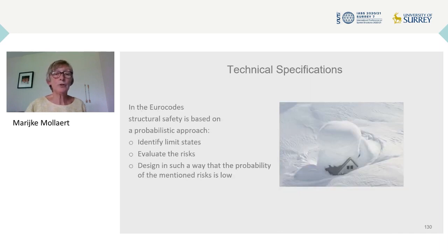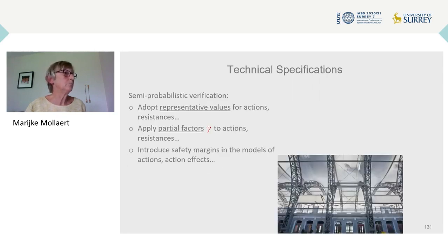In the Eurocode, structural safety is based on a probabilistic approach. We identify limit states, evaluate the risks, and design in such a way that the probability of these risks remains low. We adopt representative values for actions and resistances, apply partial safety factors to actions and resistances, and introduce safety margins for the models of actions and action effects.